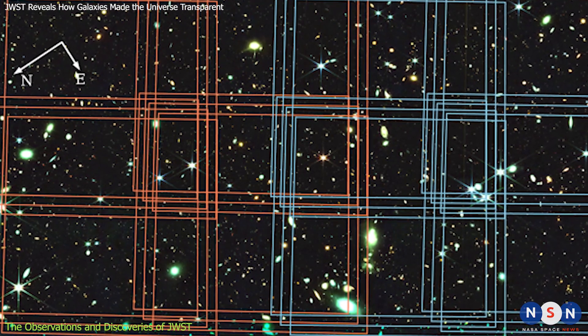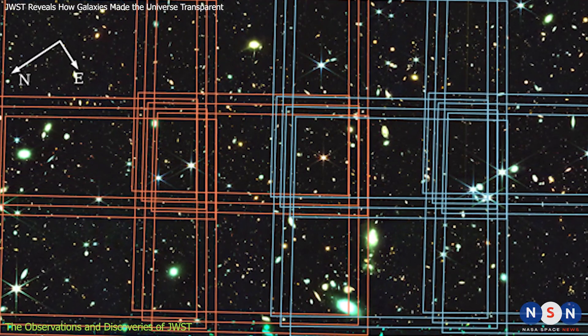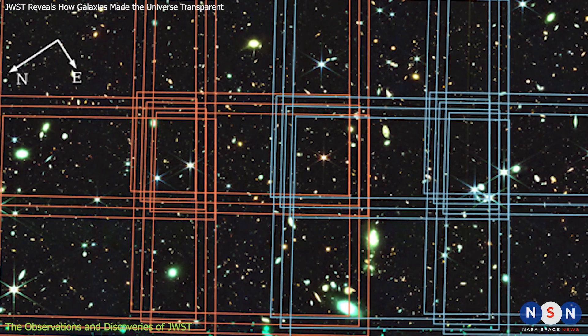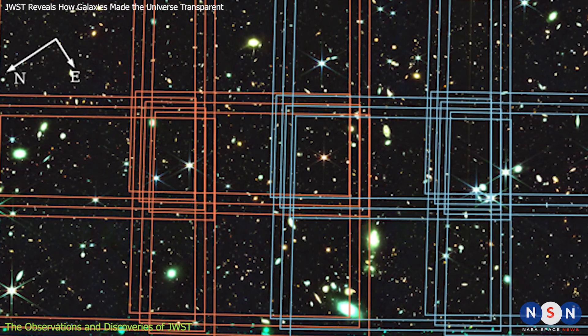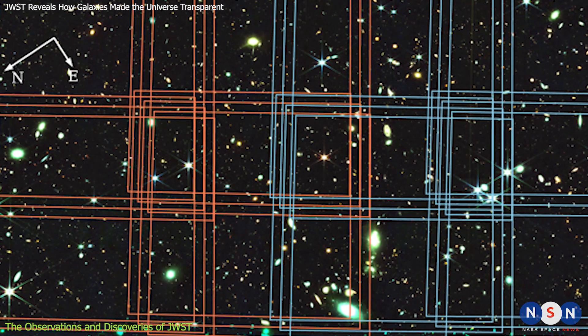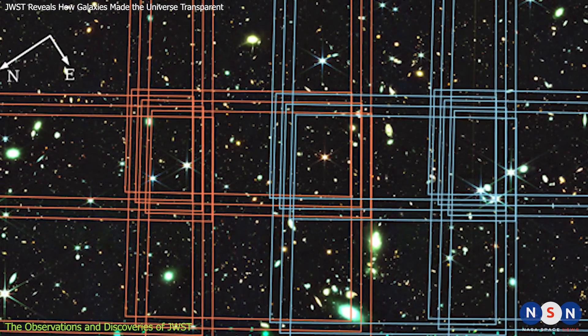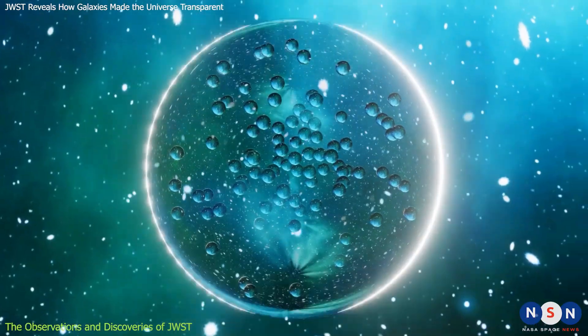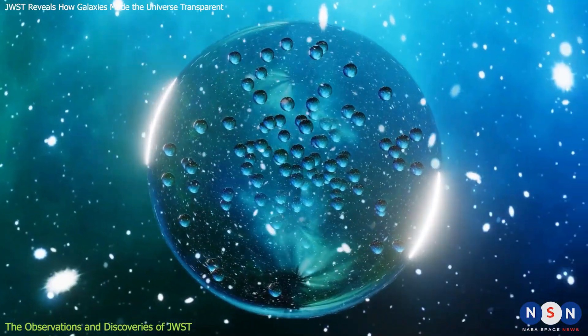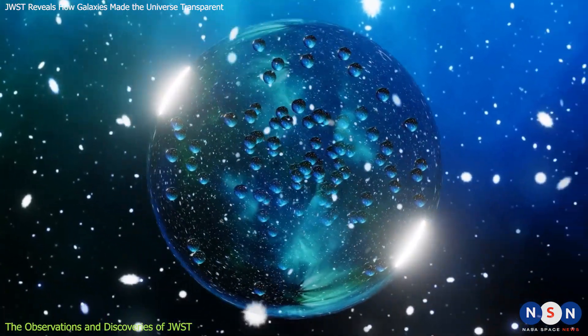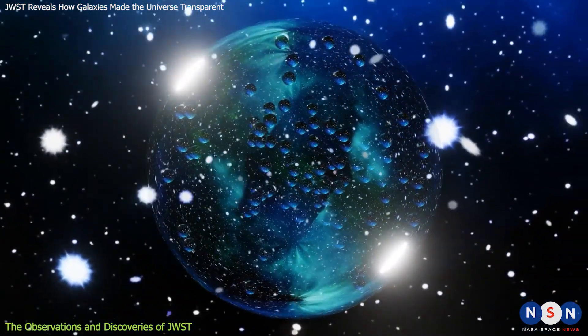However, they also found that some of these galaxies had very high escape fractions of ionizing photons, meaning that they were surrounded by large bubbles of ionized gas that allowed most of their ionizing light to escape into the intergalactic medium. These bubbles had a radius of about 2 million light years, which is huge compared to the size of the galaxies themselves.